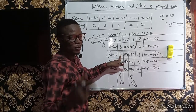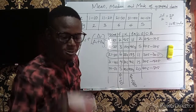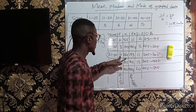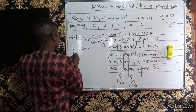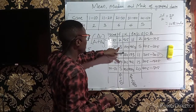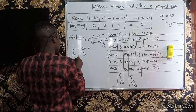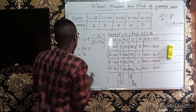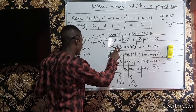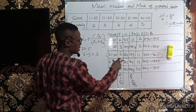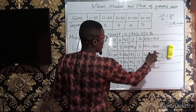Looking at the frequencies 2, 3, 6, 4, 5, the highest frequency is 6, in the class 21 to 30. Coincidentally, the modal class and the median class are the same. L1, the lower class boundary of the modal class, is 20.5. d1 is the difference between the frequency of the modal class and the frequency above it: 6 − 3 = 3. d2 is the difference between the frequency of the modal class and the frequency below it: 6 − 4 = 2. The class size c is 10.